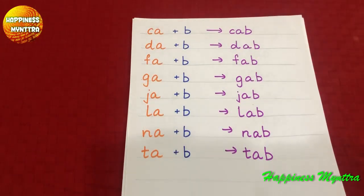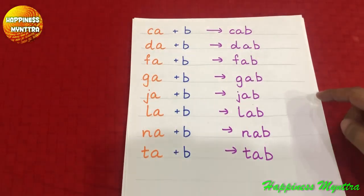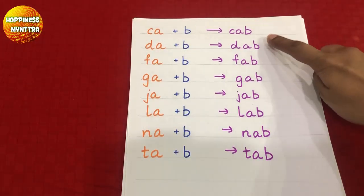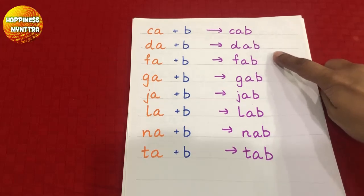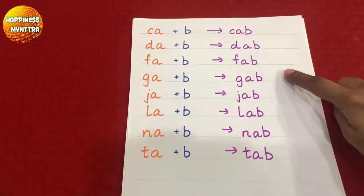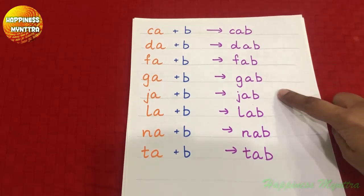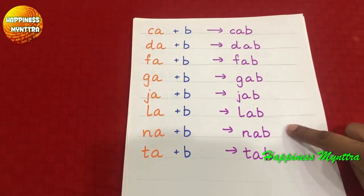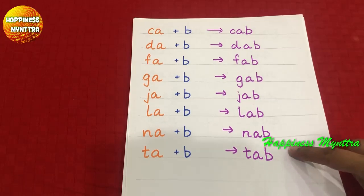We have the AB family now. So we have: cab, dab, fab, gab, jab, lab, nab, and tab.